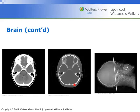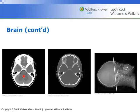Occipital bone. This is the cerebellar peduncles. Cerebellum. Cerebellum and the right lambdoid suture. Fourth ventricle. This little white dot here is the basilar artery. This arch of bone here is the sella turcica.